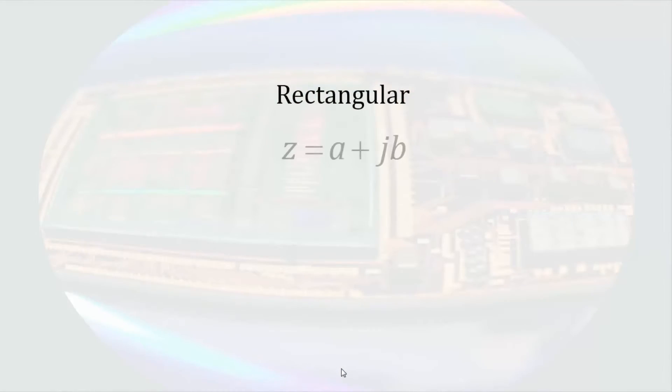So any complex number can be expressed in rectangular coordinates as z equals a plus jb or it can be expressed in polar coordinates as r times e to the j phi.